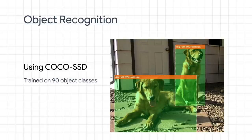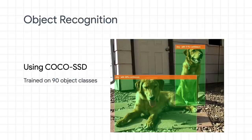First up is object detection. This model uses a model known as CocoSSD behind the scenes and is trained on 90 common objects. It can recognize those objects in images and provide us with the location of each object with bounding box information. Notice how it can detect multiple objects and multiple classes of objects at the same time. This is different from image recognition, which understands something might be in an image, but won't tell us where or how many — and this is why CocoSSD is super useful.